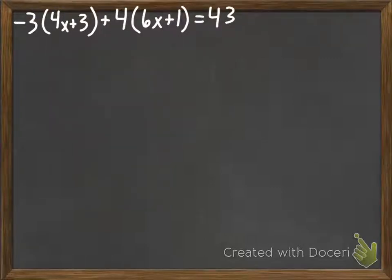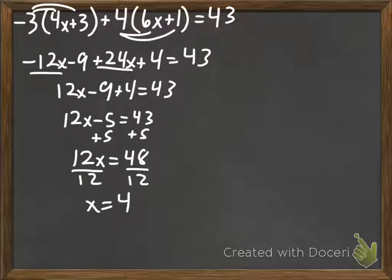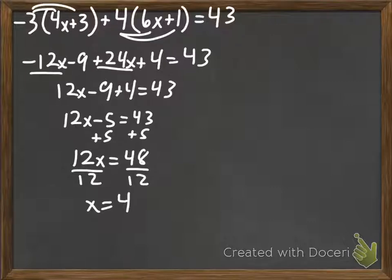I now have a double-distributive property example for you, and it doesn't have variables on both sides. I don't think it's going to be too much of a difference if you see that in your practice problems. Go ahead, pause the video and try this now. Here's the solution — after you check your work with mine, the video is over. This was a little longer than intended, but there's a lot of information here. Move on to the practice problems.